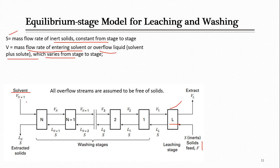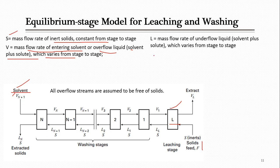V enters as pure solvent at the n+1 stage, but as it passes through various stages it extracts solute, so the concentration of solute in V keeps increasing. Thus V varies in composition from stage to stage. L is the mass flow rate of the underflow liquid — the liquid carried with the wet solid — which is the solvent plus solute. Its flow rate also varies because as stages proceed, more solute is extracted from the underflow.